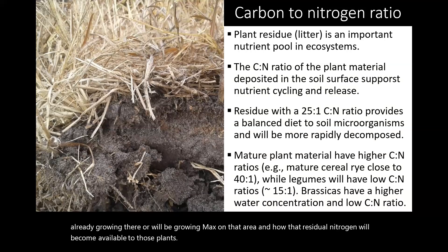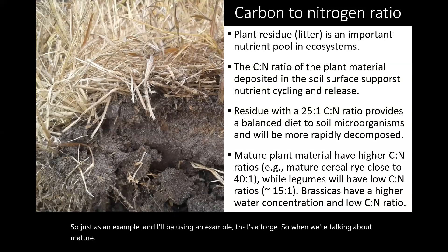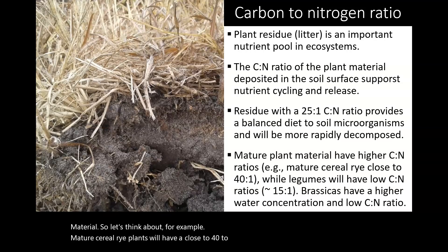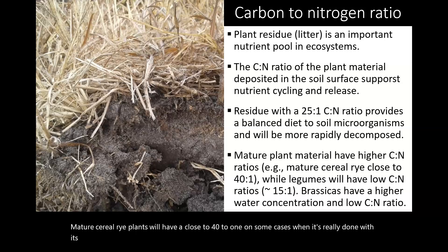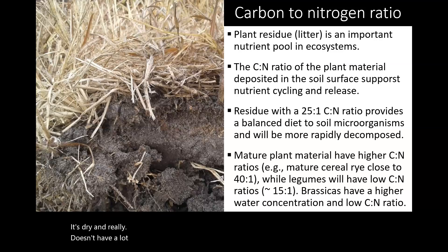Just as an example using a forage: when we're talking about mature material — for example, mature cereal rye — plants will have a ratio close to 40 to 1 in some cases, when it's really done with its cycle of growth and has fully matured, and it doesn't have any potential to grow or anything else.